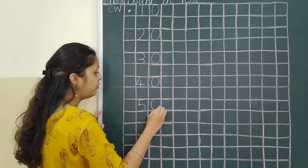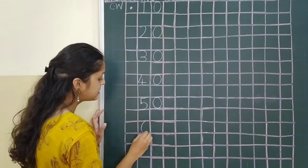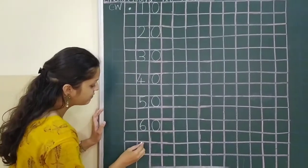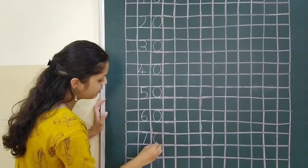Five, zero, fifty. Six, zero, sixty. Seven, zero, seventy.